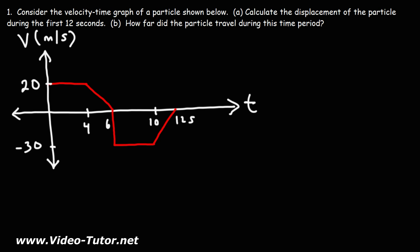Consider the velocity time graph of a particle shown below. Calculate the displacement of the particle during the first 12 seconds. So how do we do that? How do we find the displacement of a velocity time graph?